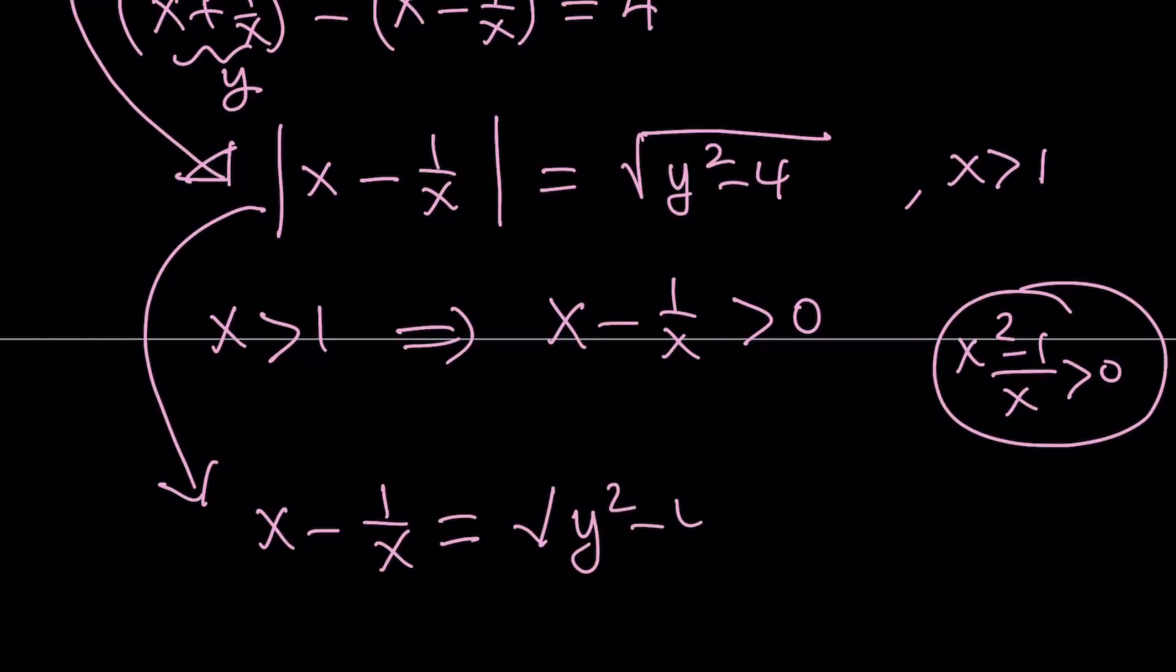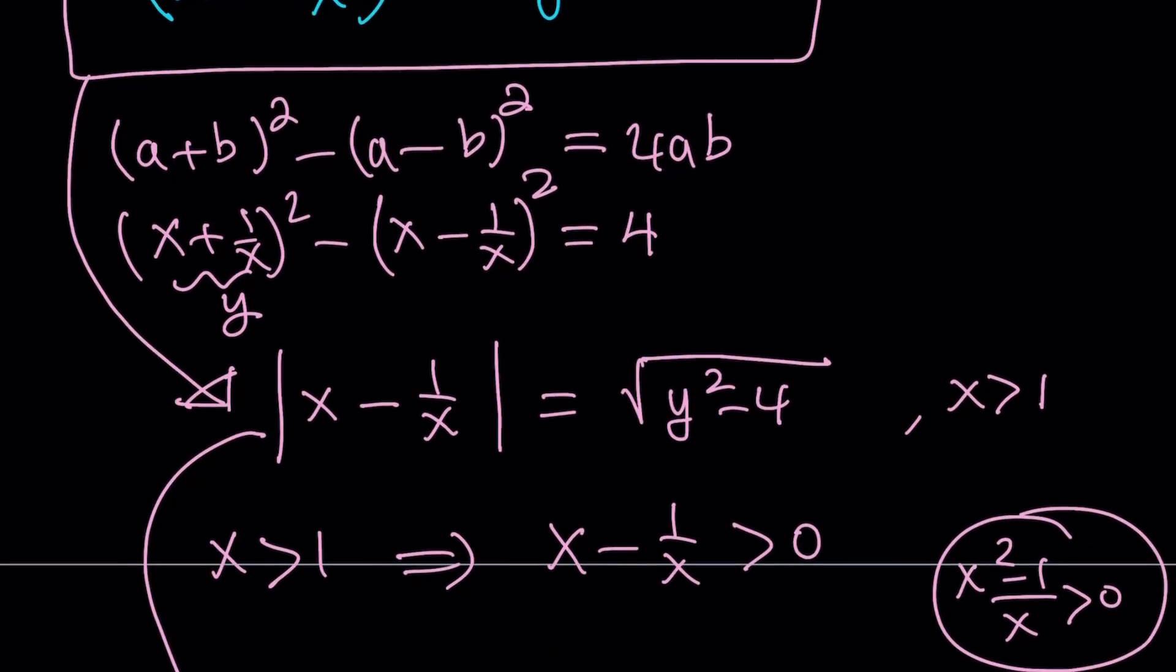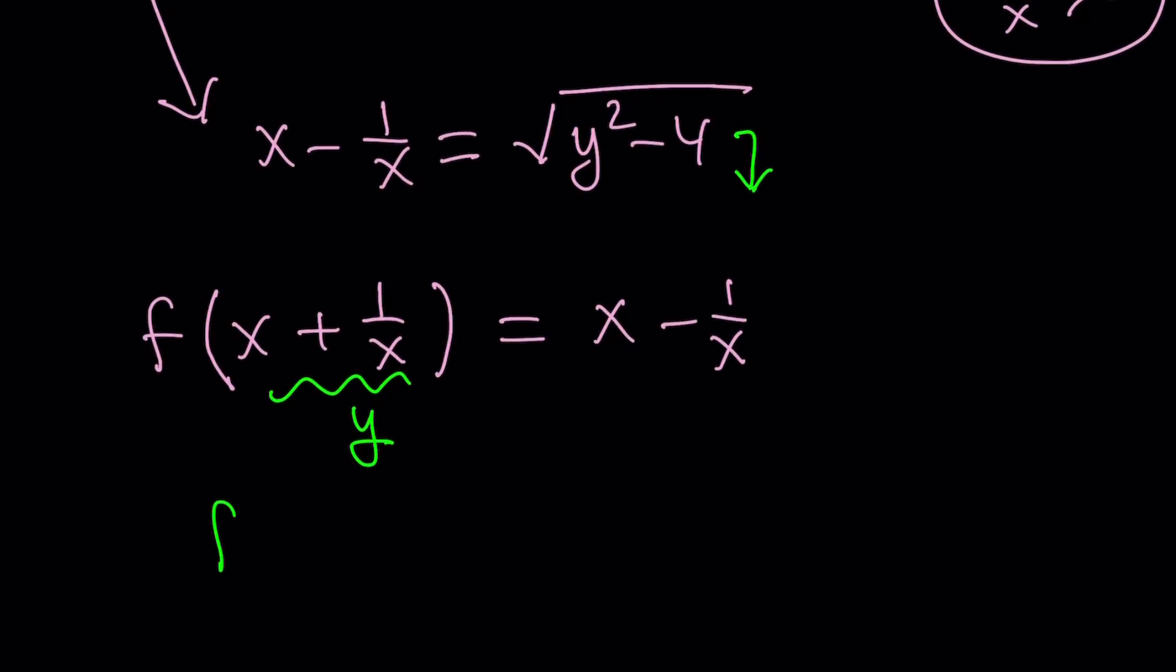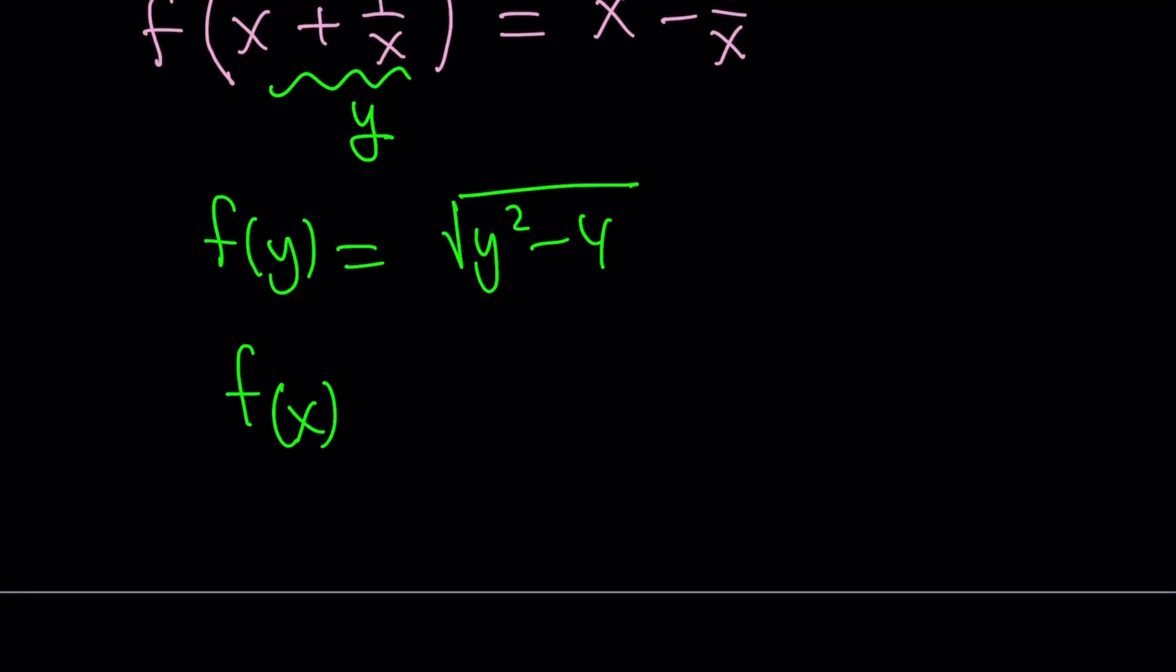Now remember, our equation, the original problem was given as f of x plus 1 over x is equal to x minus 1 over x. Again, with the condition x is greater than 1, we already used that. And we started off by setting this equal to y. And now we realize that x minus 1 over x can be written in terms of y as well. From here, we get f of y equals square root of y squared minus 4. And if you just replace y with x here, you're going to get f of x equals square root of x squared minus 4.